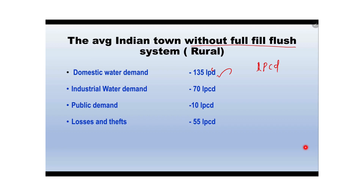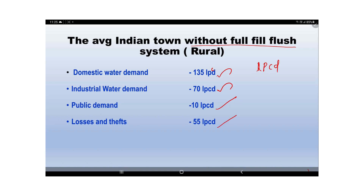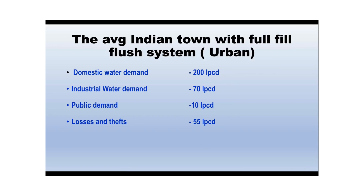Water demand values: domestic demand is 70 litres per capita per day. Public demand is 10 LPD. Losses and theft: 55 LPD. This is for a rural area without a flush system. For an urban area — an average Indian town with a flush system — the domestic water demand is higher.